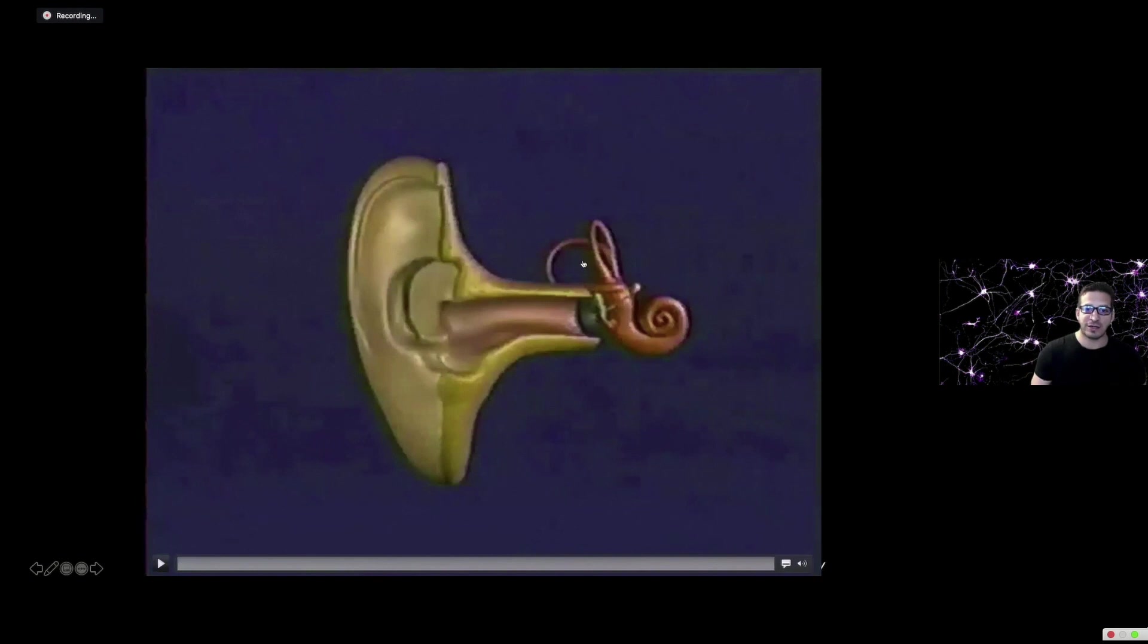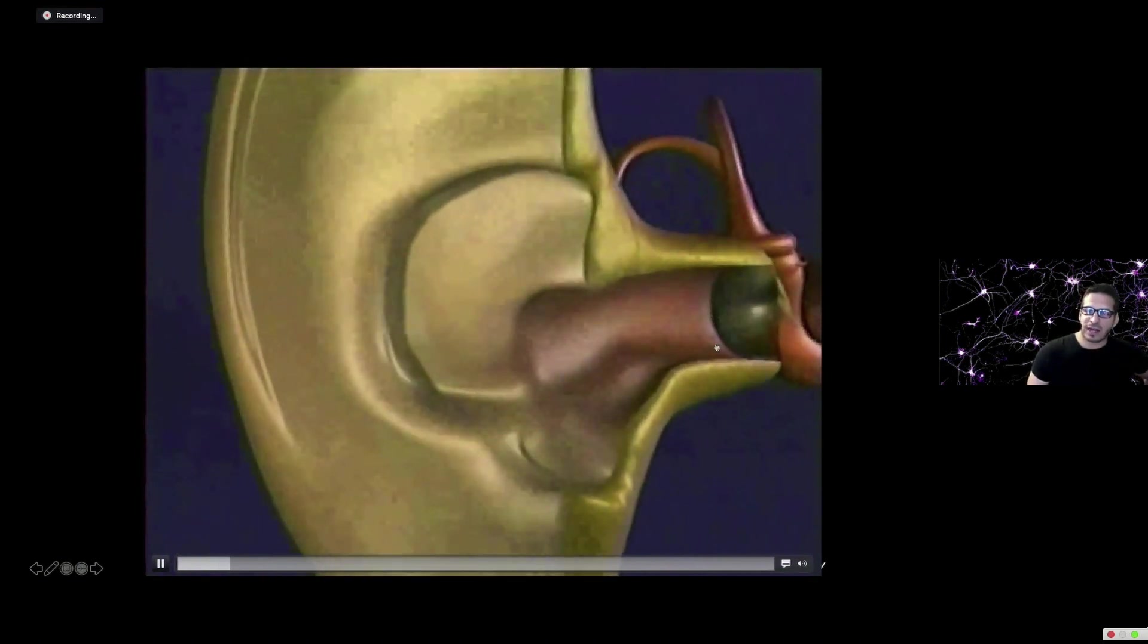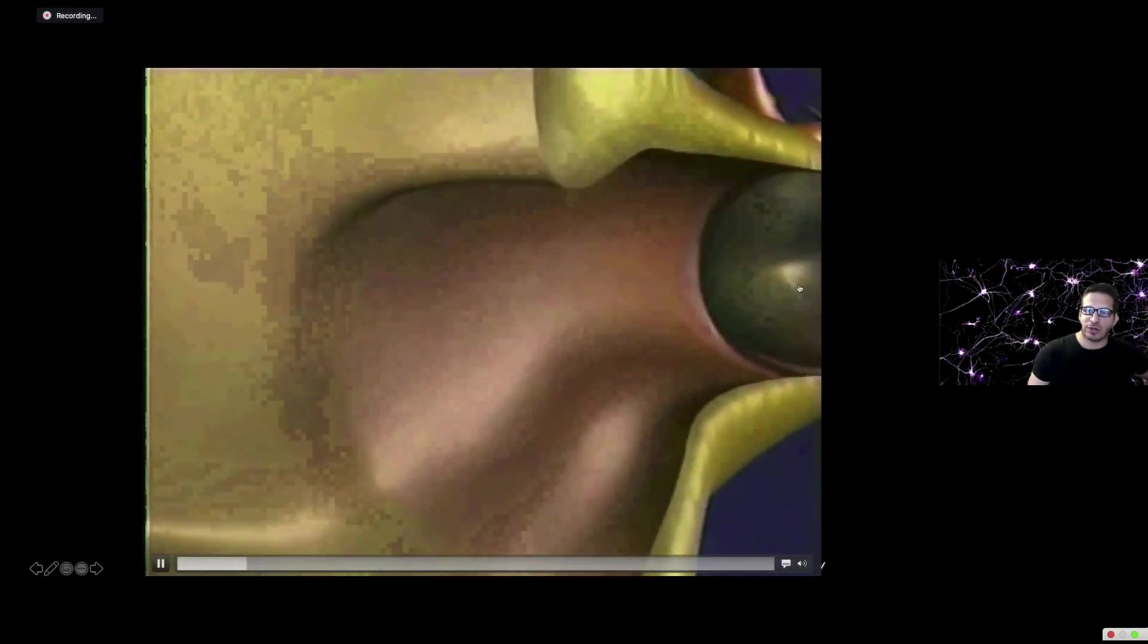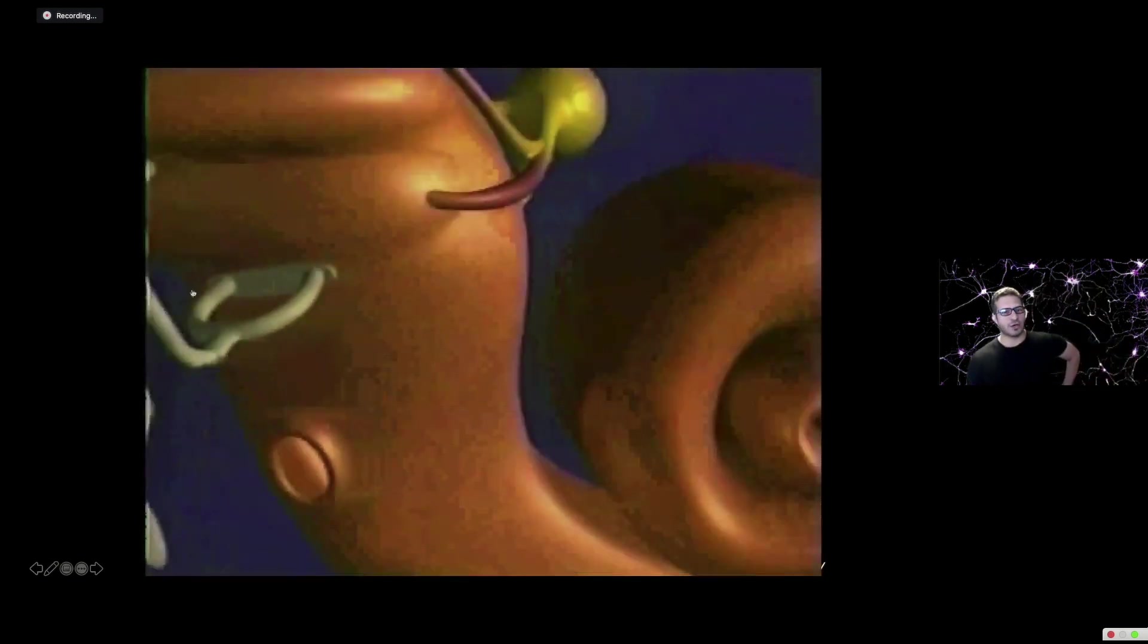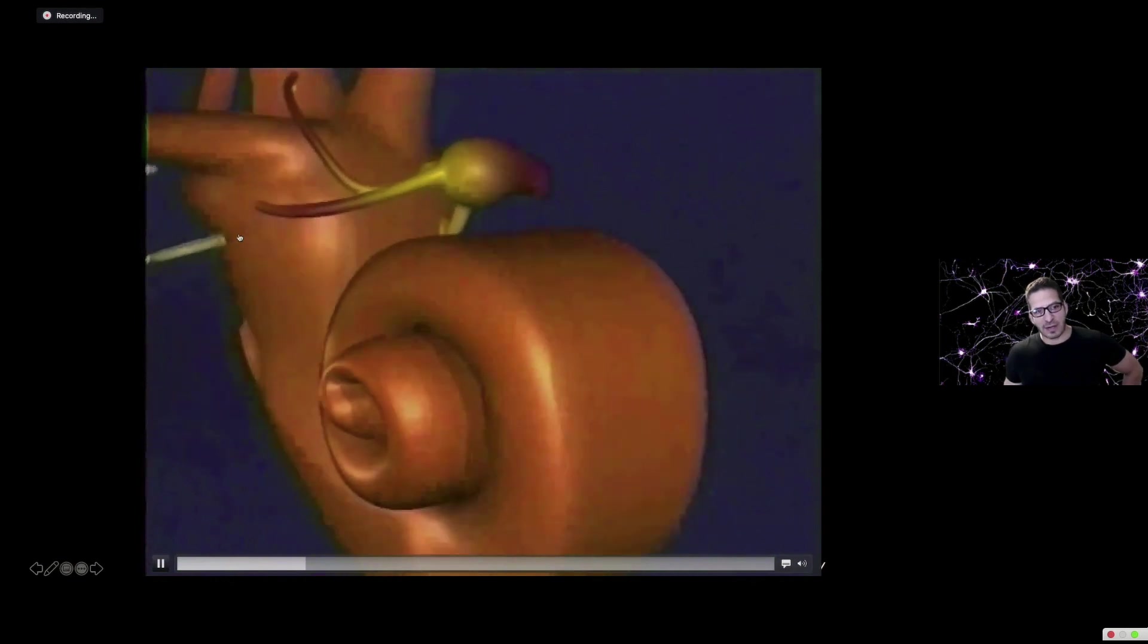Before I go further, you need to understand how hearing actually works. You all recognize the ear and the cochlea inside the ear that's shaped like a spiral. This video shows how that works. Sound goes into the ear, through the ear canal, and those air vibrations vibrate the eardrum, which then vibrates the middle ear bones. That third middle ear bone causes vibrations inside the cochlea.